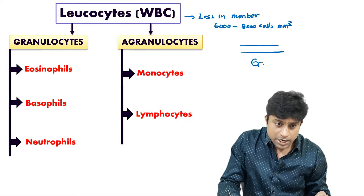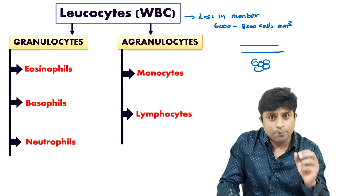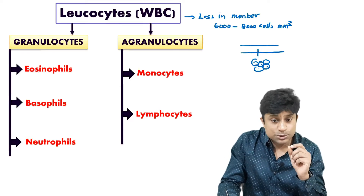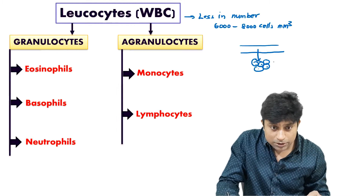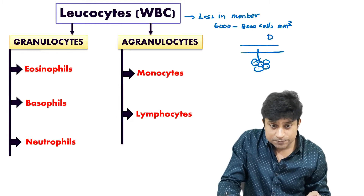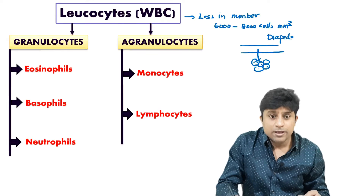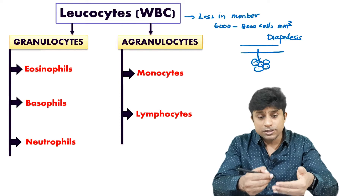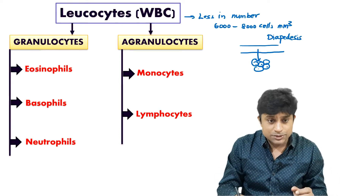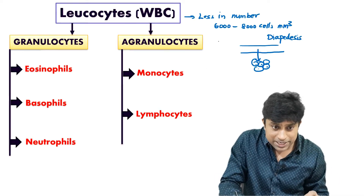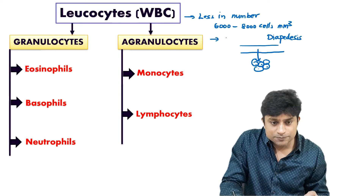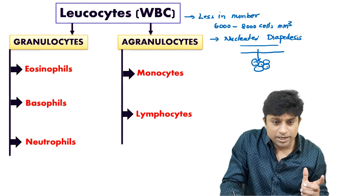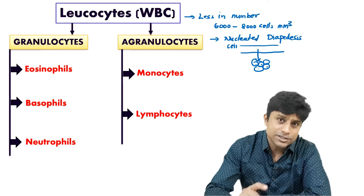WBC show a special property where they can move out from capillaries and enter into tissues — this is called diapedesis, the movement of WBC from capillary walls into the tissues. WBC are less in number and are nucleated cells, whereas RBC do not have a nucleus.